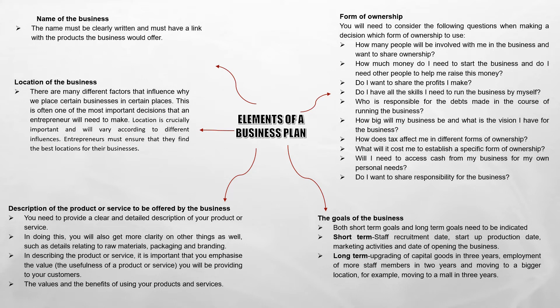Goals of the business: both short-term and long-term goals need to be indicated. Short-term examples include staff recruitment date, start-up production date, marketing activities, and days of opening the business. Long-term examples include upgrading capital goods in three years, employment of more staff members in two years, and moving to a bigger location such as a mall in three years.